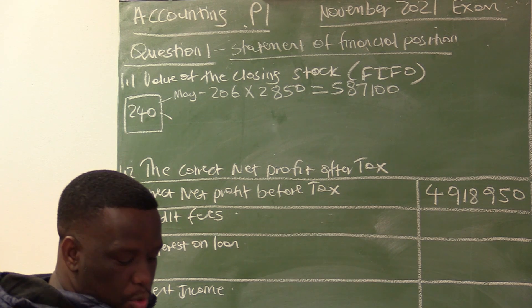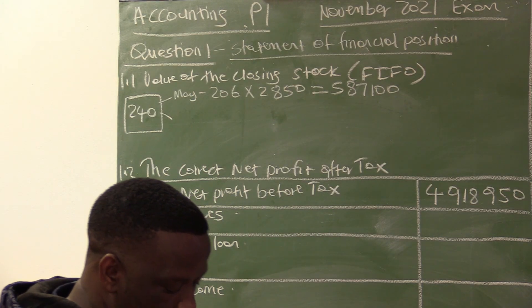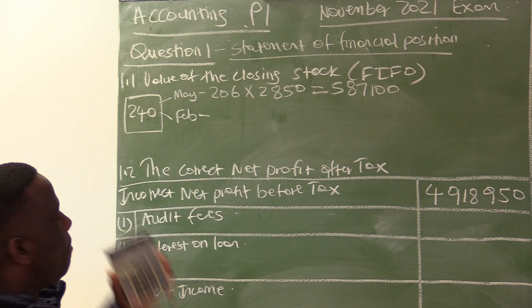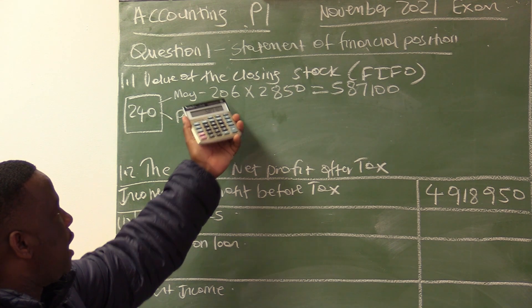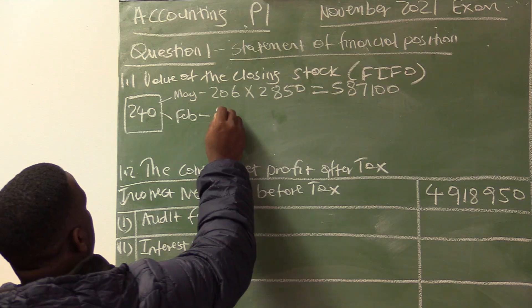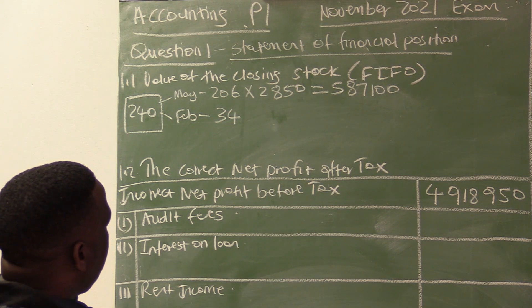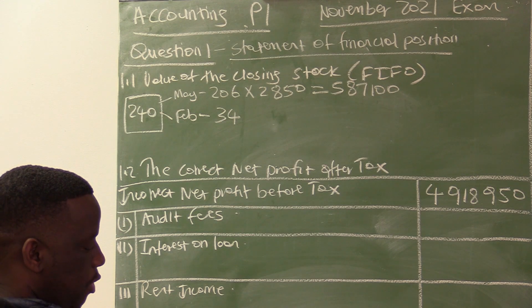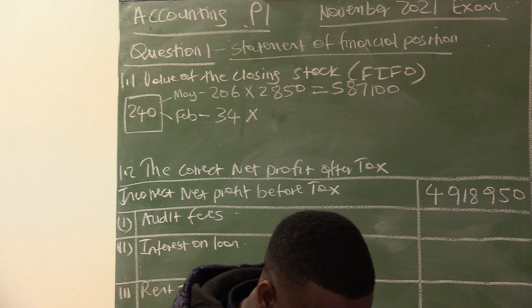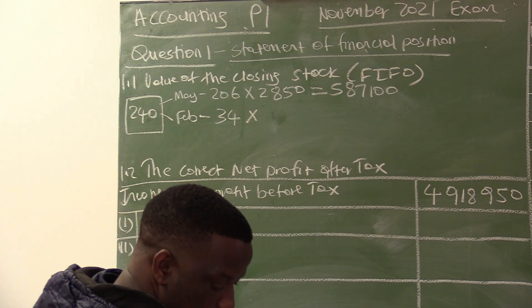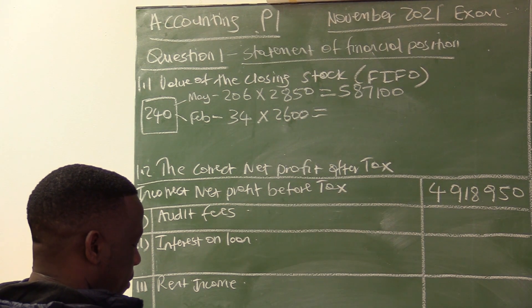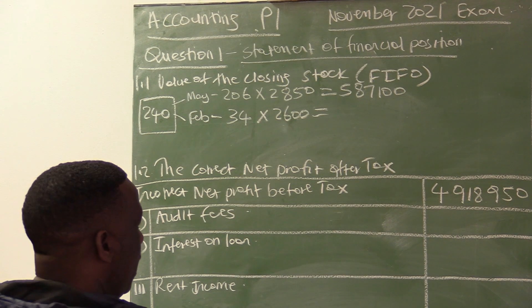Since the total closing stock is 240 units and we have accounted for 206 from May, we are short by 34 units. Moving up to the February purchase, we take 34 units at R2,600 each. So 34 multiplied by R2,600 equals R88,400.